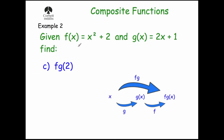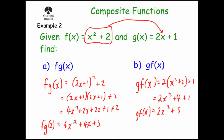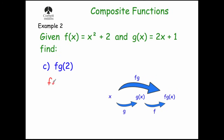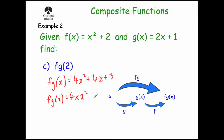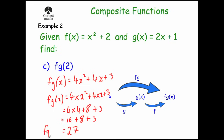Part C: with composite functions you can substitute values in for the variable, such as fg of 2. We worked out that fg of x equals 4x squared plus 4x plus 3. So fg of 2 equals 4 times 2 squared plus 4 times 2 plus 3. Squaring the 2 first: 4 times 4 is 16, plus 8 plus 3. 16 plus 8 is 24, plus 3 is 27. So fg of 2 equals 27.